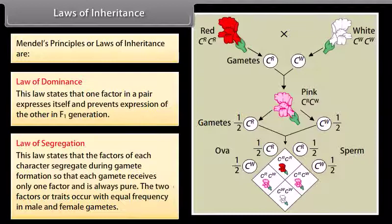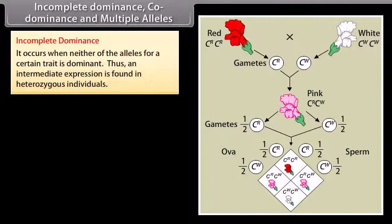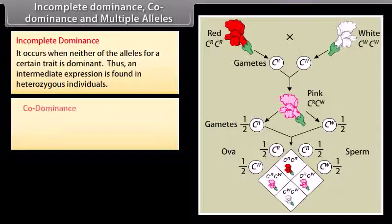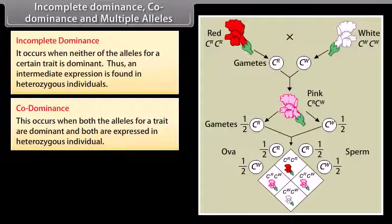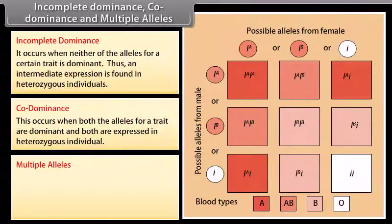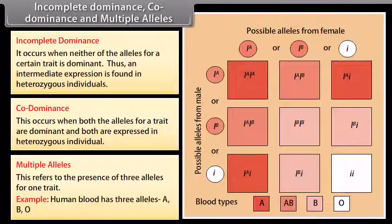Incomplete dominance and co-dominance. Incomplete dominance occurs when neither of the alleles for a certain trait is dominant, and thus an intermediate expression is found in heterozygous individuals. Co-dominance occurs when both alleles for a trait are dominant and both are expressed in the heterozygous individual — such a phenomenon can be observed with multiple alleles. Multiple alleles refers to the presence of three or more alleles for one trait; for example, human blood groups have three alleles: A, B, and O.